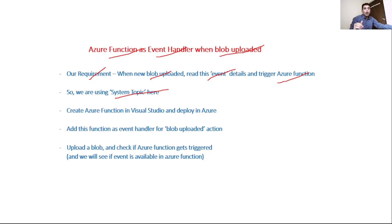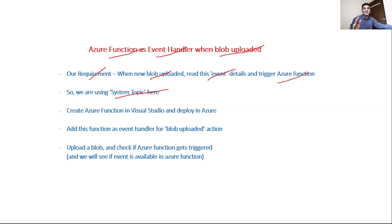A system topic means events generated from Azure resources — for example, when a blob is uploaded or when a message arrives in a Service Bus queue. These events get published to the system topic, which you can consider as a default topic. We can also have custom topics, where we publish our own custom events — for example, from a custom C# .NET application.